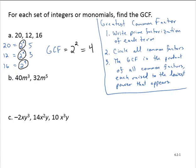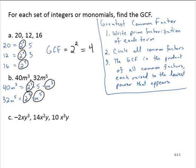Exercise B. We have to find the GCF of 40m to the third and 32m to the fifth. So 40m to the third is 2 to the third times 5 times m to the third. And 32m to the fifth is 2 to the fifth times m to the fifth. Circling the common factors: 2 is a common factor, m is a common factor. So the GCF is 2 to the third power — choosing the smaller exponent — times m to the third power, again choosing the smaller exponent. So the GCF is 8m to the third.